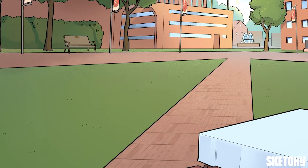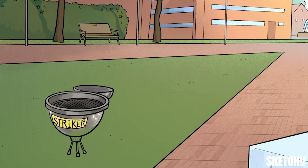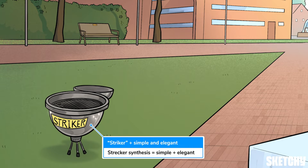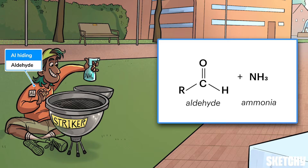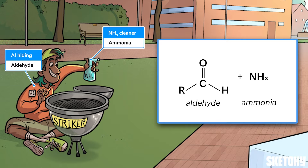We'll start with the Strecker synthesis, which we've symbolized with this Stryker brand grill. This synthesis is a bit simpler and more elegant than the Gabriel process, which is why the Stryker grill is simple but sleek. This process starts with an aldehyde and ammonia reacting. So Al's hiding behind the grill with a bottle of ammonia cleaner. Stealth cleaning wouldn't be my first choice for extracurricular fun, but to each their own.